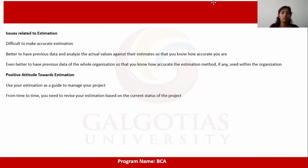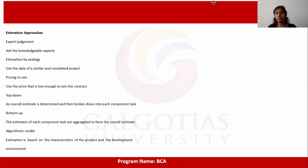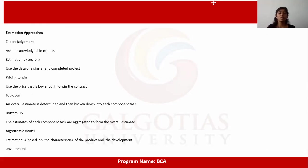Have a positive attitude towards estimation and use it as a guide to manage your project. Revise your estimation from time to time based on the current status of the project. Estimation approaches include: expert judgment — asking knowledgeable experts; estimation by analogy — using data from a similar completed project; pricing to win — using a price low enough to win the contract; top-down — an overall estimate is determined then broken into component tasks; bottom-up — estimates of each component task are aggregated to form the overall estimate; and algorithmic model estimation — based on product characteristics and the development environment.